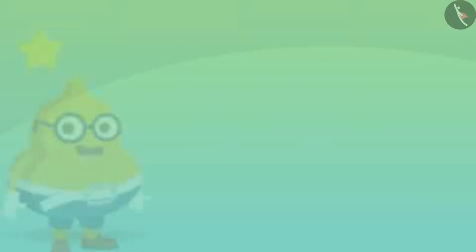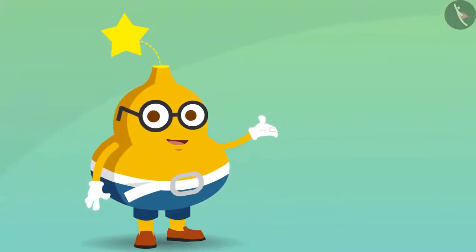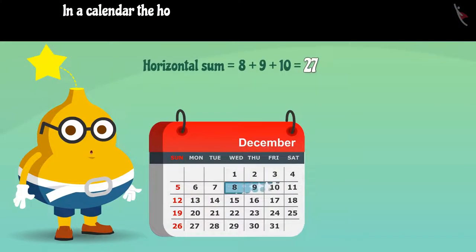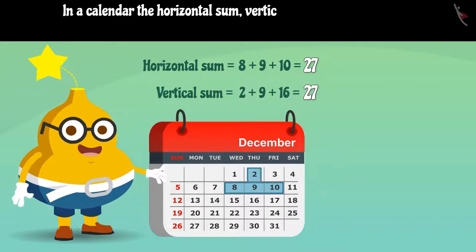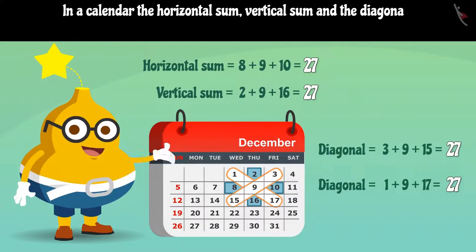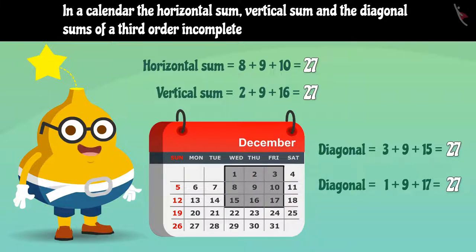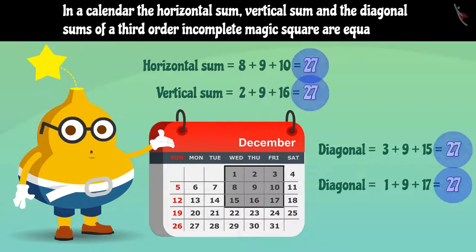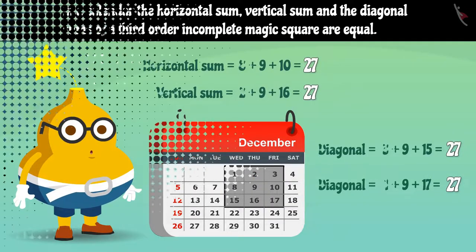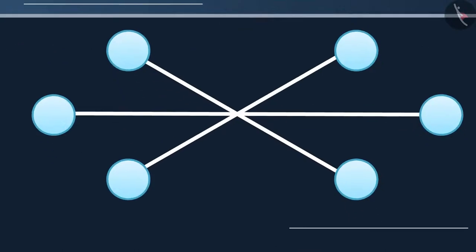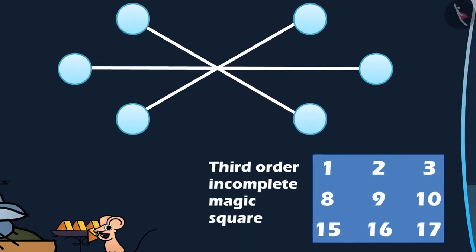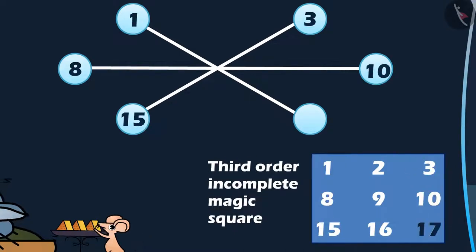He says, we know that in a calendar, the horizontal sum, vertical sum and the diagonal sums of a 3rd order incomplete magic square are equal. So here, to fill this star, we can simply use the numbers in a 3rd order incomplete magic square with the central number left out.